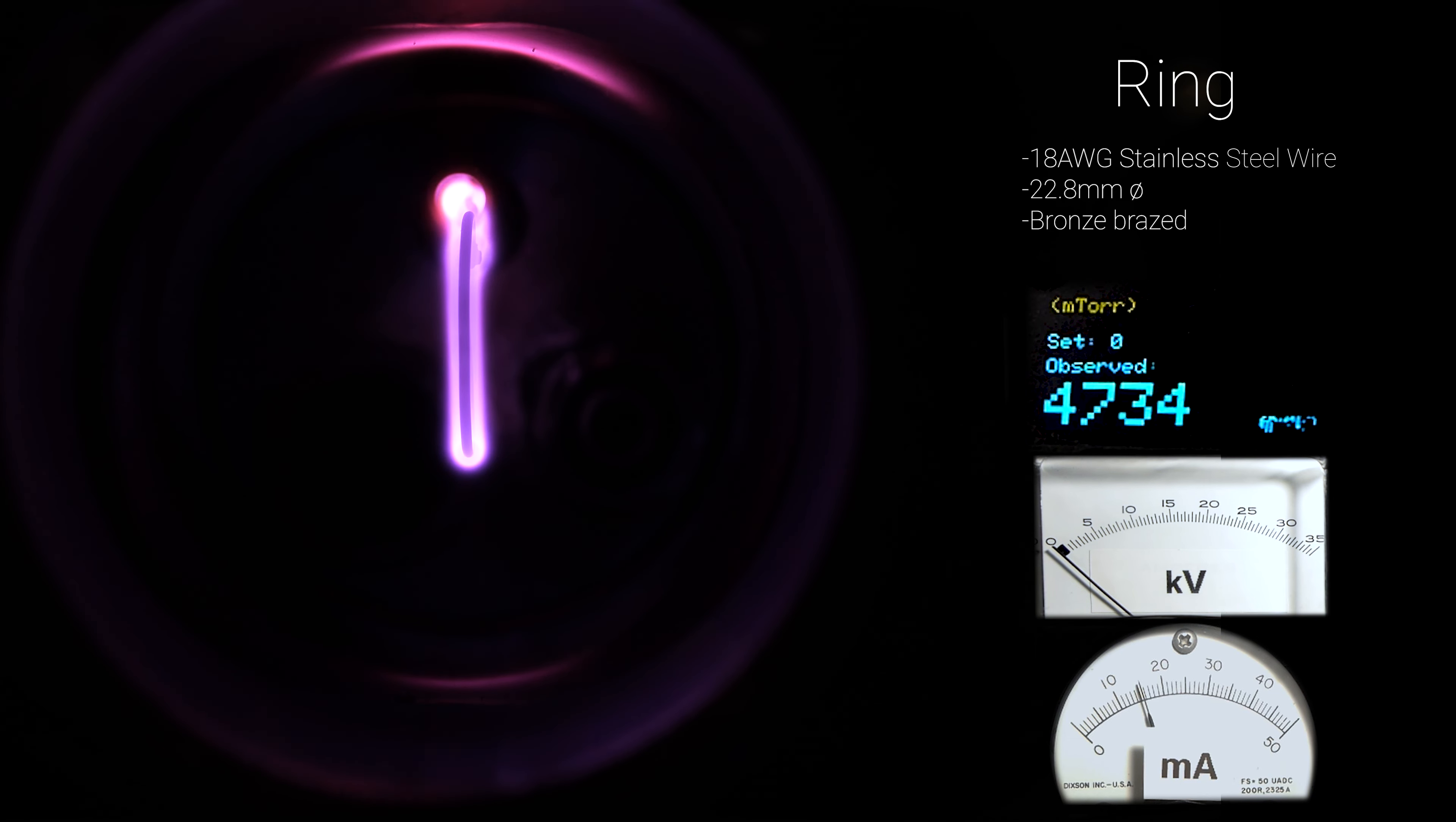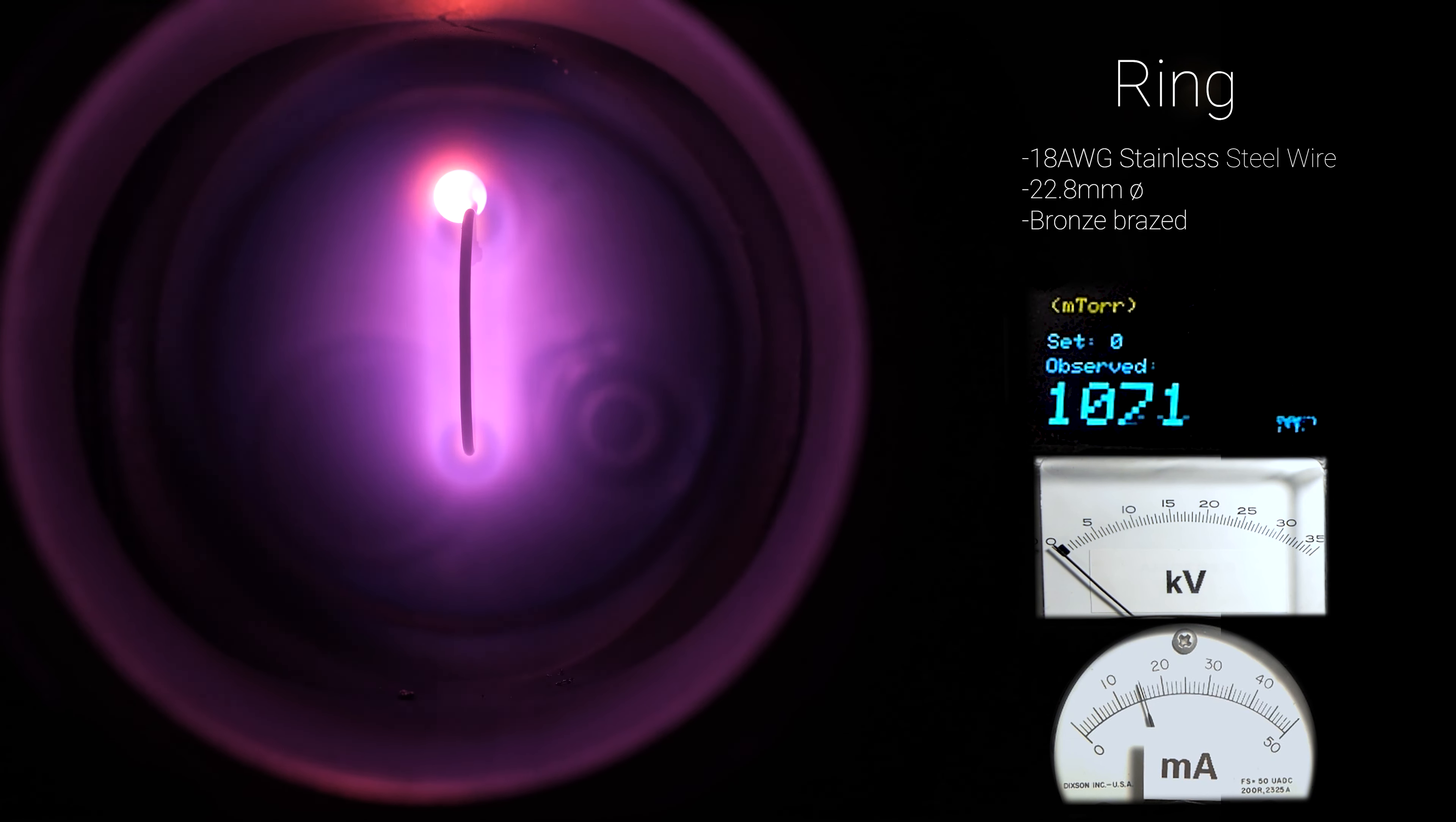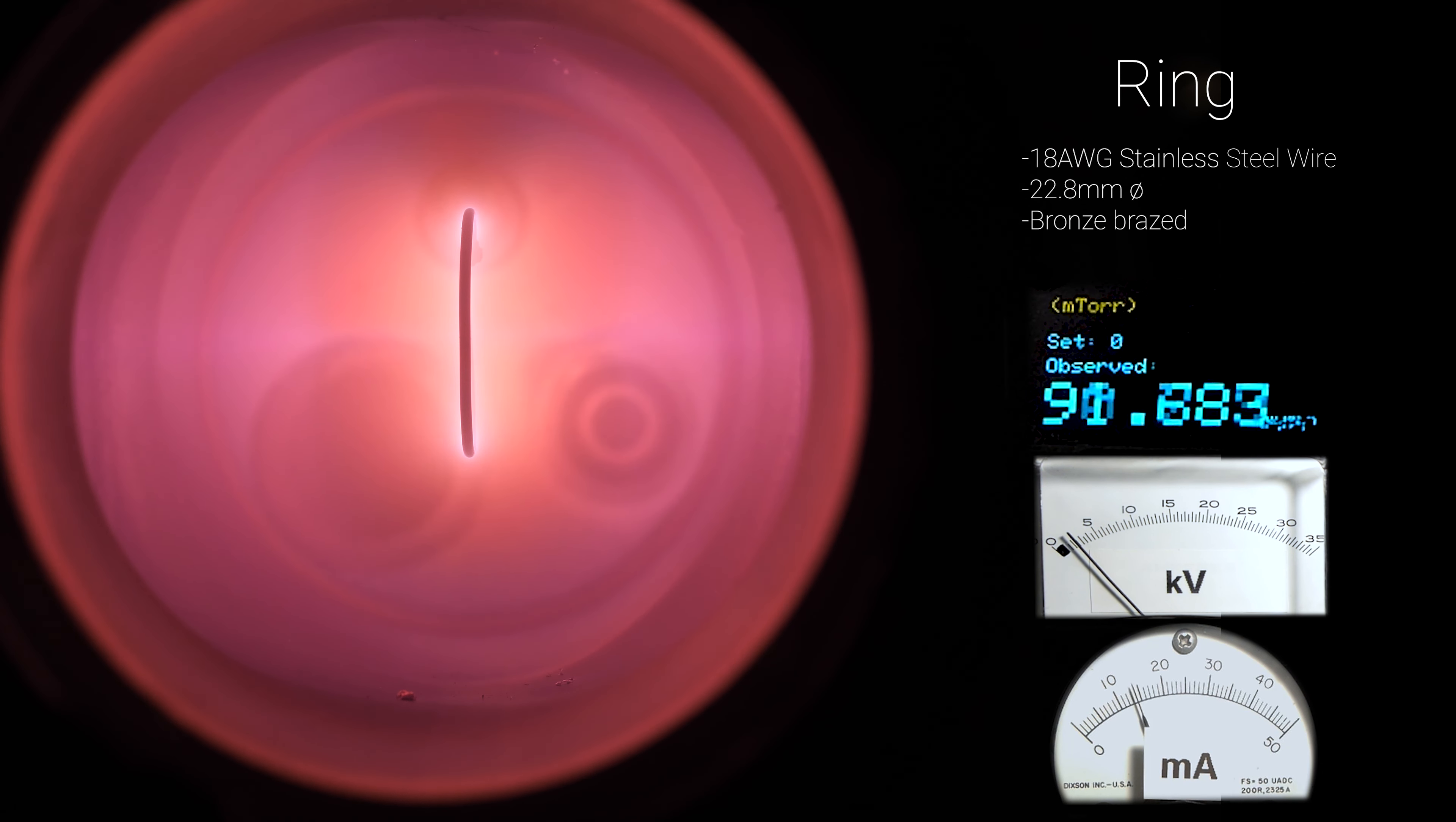As the pressure drops, the mean free path is lengthened so neutral air molecules are ionized further away from the cathode, and they travel further before cooling down and recombining to become neutral air molecules again. Eventually though, the ions have enough kinetic energy to be influenced by the grid a little differently.